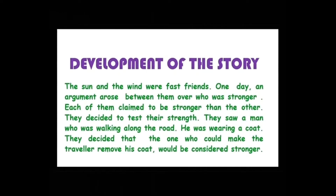Pyaare bachiyo — the sun and the wind: suraj ate hawa pakke dost sun. One day, ik din an argument arose between them over who was stronger. Ik din ona vich ik behash chid gai ke donna vich ho taakat war hai. Each of them claimed to be stronger than the other — donno hi apne apne aapano jada taakatwar kehande shan. They decided to test their strength. They saw a man walking along the road. He was wearing a coat, and they decided the one who could make the traveller remove his coat would be considered stronger.